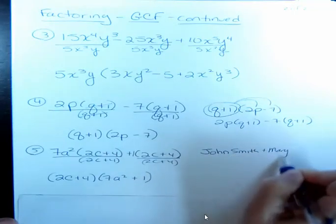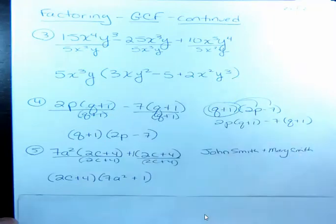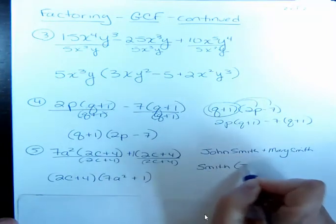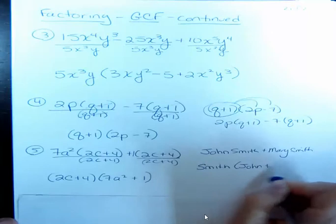So if you said, I have a family, John Smith plus Mary Smith. I know I'm using the most bland names, but I could introduce them that way. This is John Smith and this is Mary Smith. But I could say, these are the Smiths. And I would just put Smith out front. And then I'd say, John plus Mary.